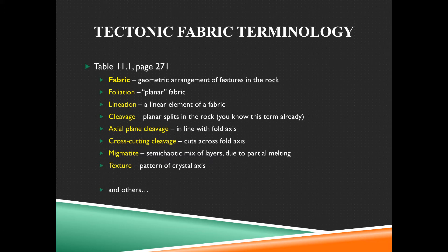Migmatite is a semi-chaotic mix of layers due to partial melting. You had layers, you get partial melting — it makes it semi-chaotic, because with some melting some stuff gets messed up, but it was only partial melting so some of it is still layered. And then texture: this is the pattern of crystal axes — are they lined up? Are they at specific angles? These are the overarching key terms.